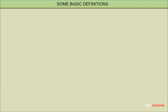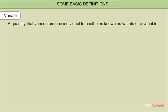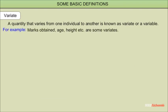Some basic definitions. Variate: a quantity that varies from one individual to another is known as a variate or a variable. For example, marks obtained, age, height, etc. are some variates.